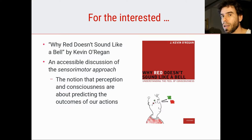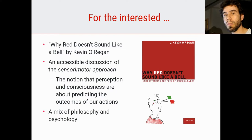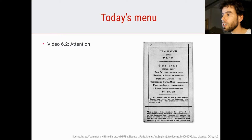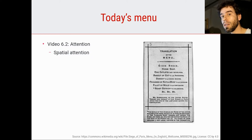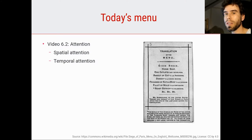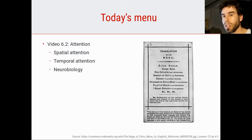Kevin O'Regan makes it quite clear in his book. What I really like about it is that it is a mix of philosophy and psychology, as is this section about attention and consciousness. So what are we going to see in this section? In video 6.2, the next video, we're going to take a look at attention — specifically spatial attention, attending to one location in space and not some other location. We're also going to take a look at temporal attention, attending to one moment in time, or essentially paying more attention at one moment than at another. And we're also going to take a look at the neurobiology of attention, specifically the biased competition theory proposed by John Duncan and others.